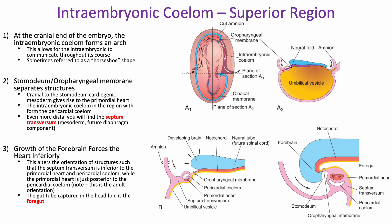Going even further distally, we have a structure called the septum transversum — a mesodermal structure that is going to be one of the main components contributing to your diaphragm. Now, your heart and diaphragm are definitely not above your head in the adult, so what has to happen is this region must be forced down inferiorly into a more anatomically correct position. This happens due to growth of the developing brain, which starts to push these structures down anteriorly and inferiorly.